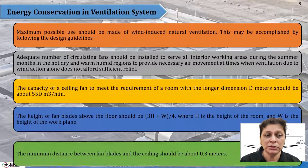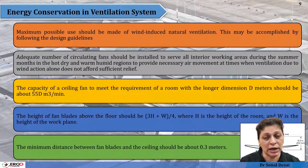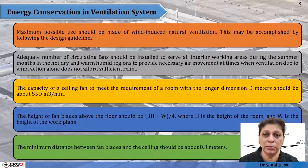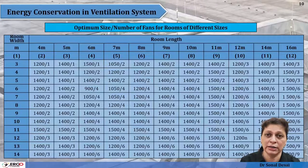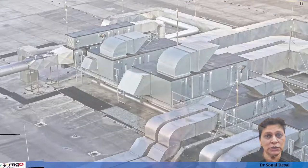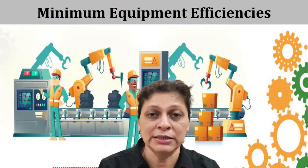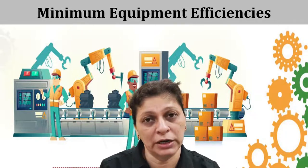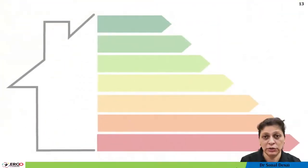Then comes mechanical ventilation and the energy consumption related to it — how to optimize the performance of a mechanical ventilation system so that it consumes minimal energy and enhances the overall energy performance of the building. That is the first part of this video series. The second part is about how to achieve maximum equipment efficiency.